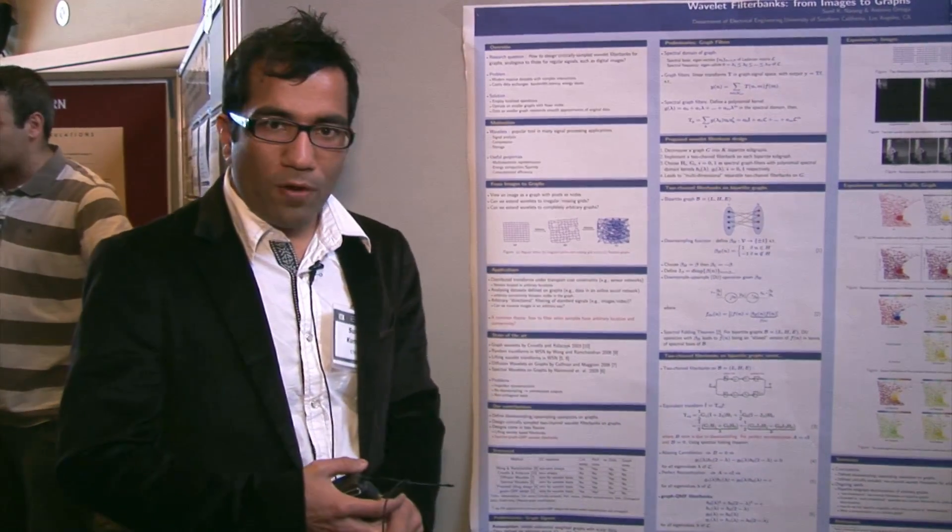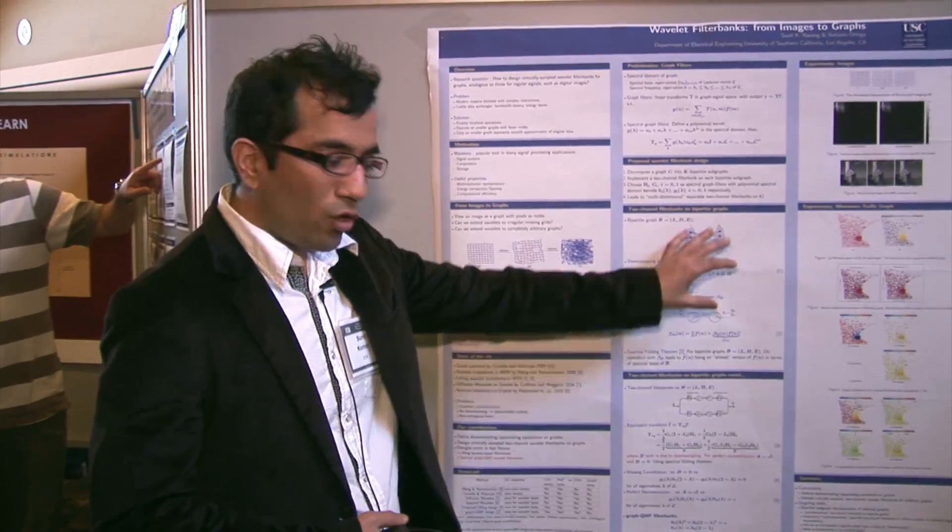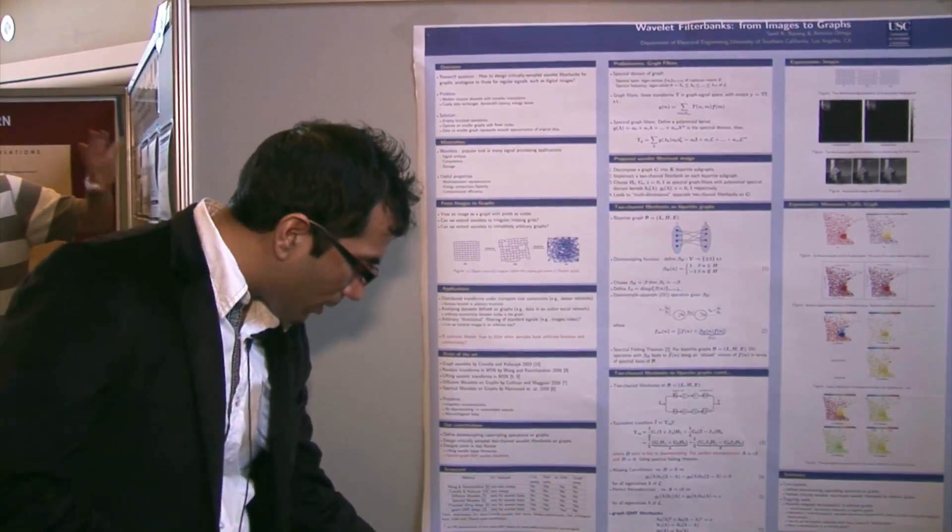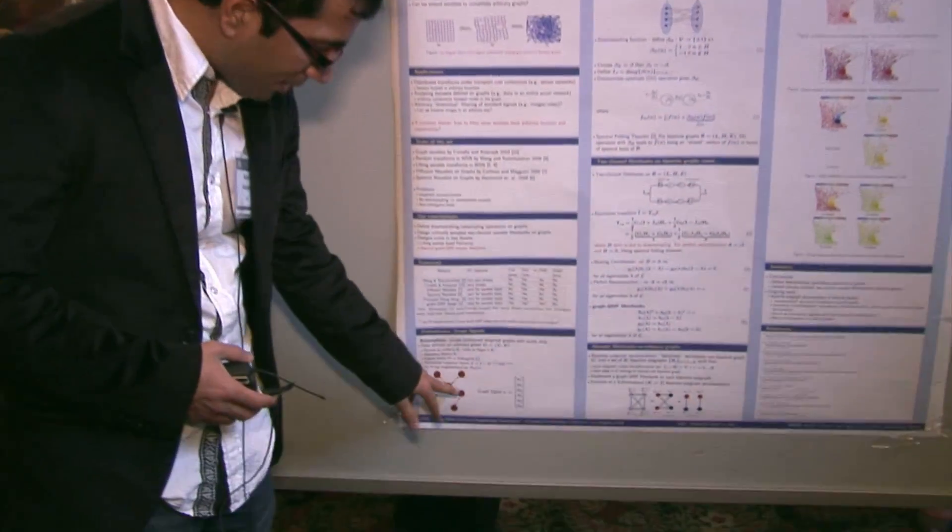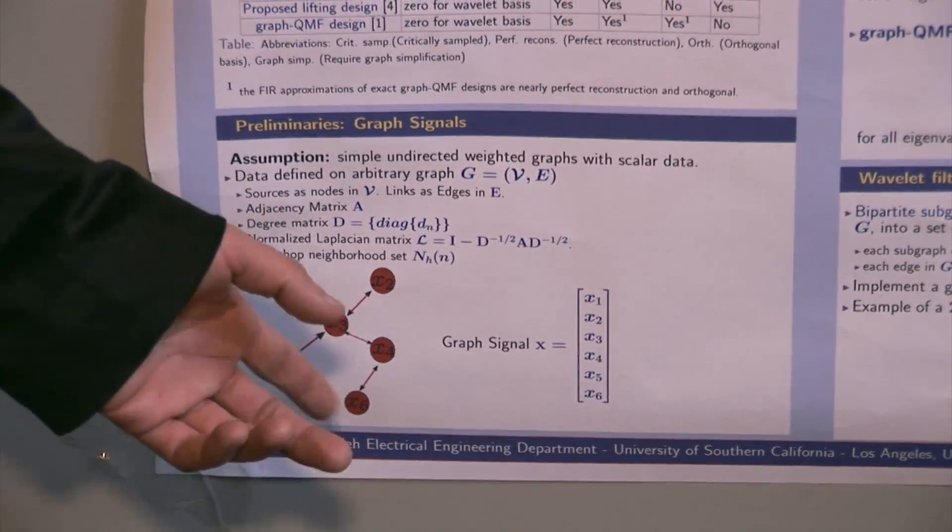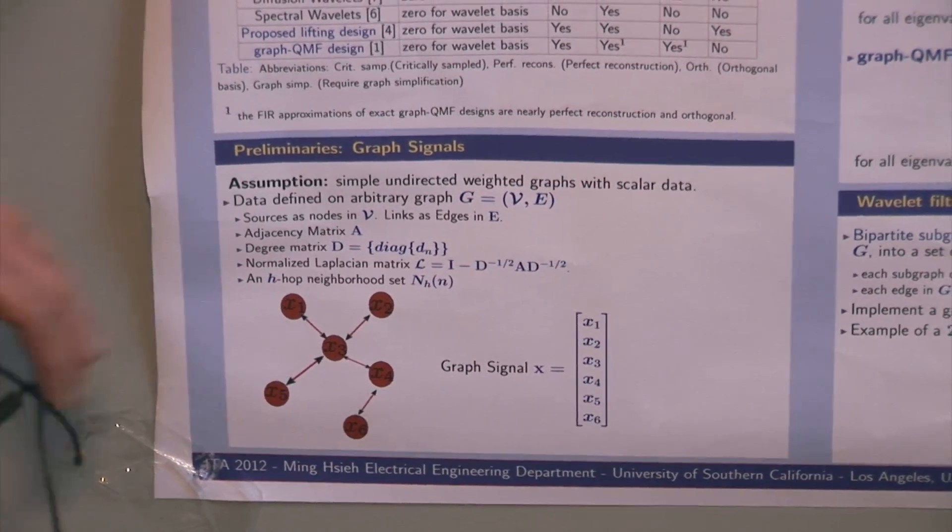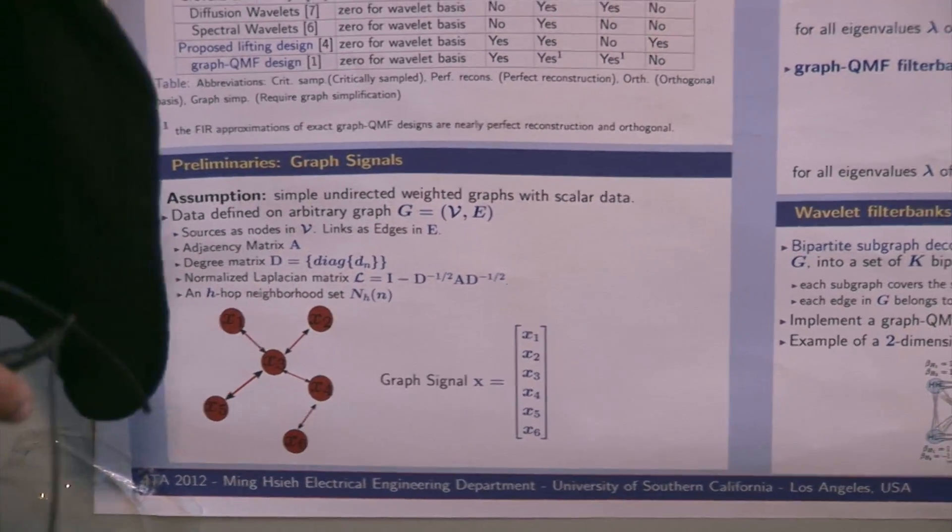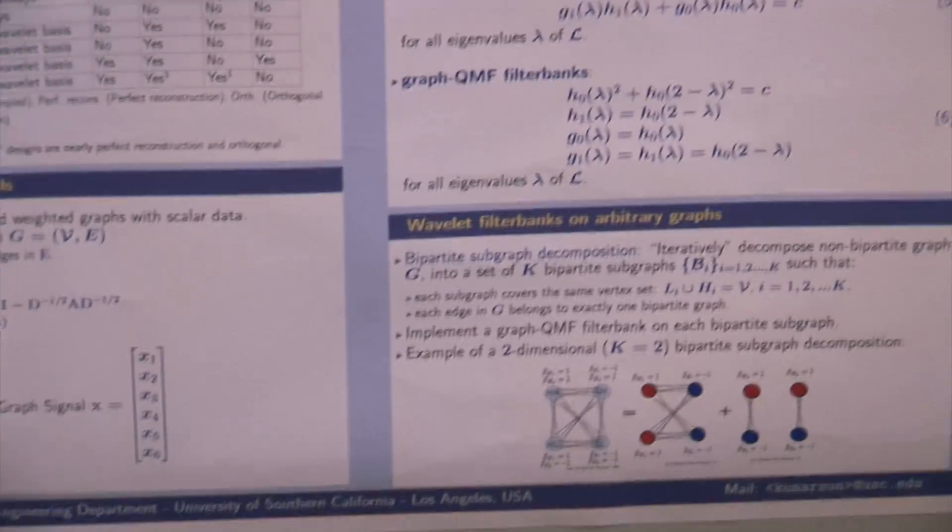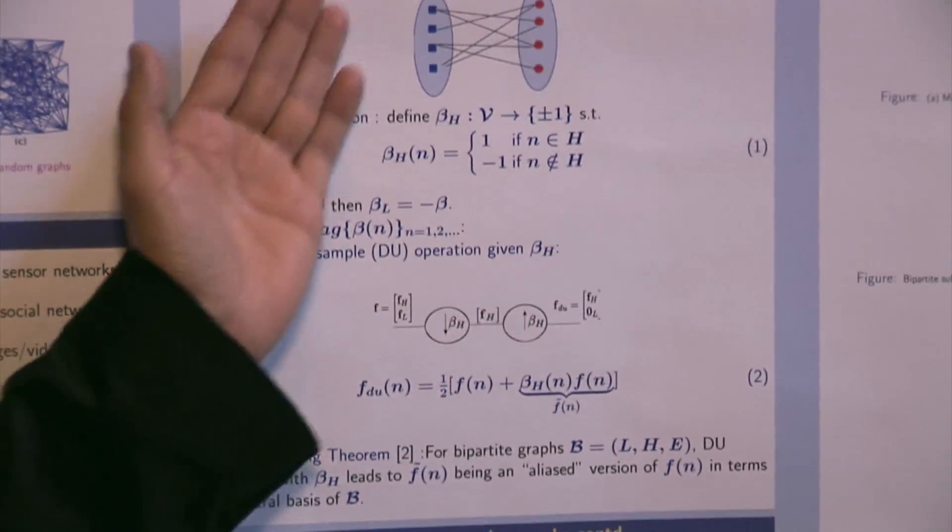To give you an overview of our system, we first act on a bipartite representation of a graph. A graph in our case looks something like this: the nodes are the data sources and they are connected where the connections represent some sort of interaction, similarity, or differences. If the graph can be decomposed into set L and H, such that all the links are from node L to H.